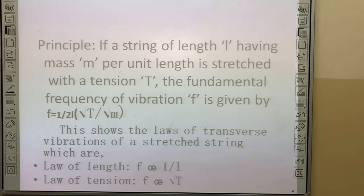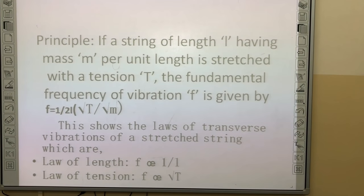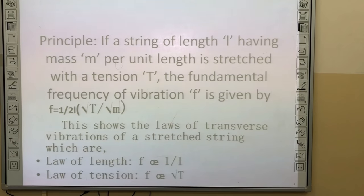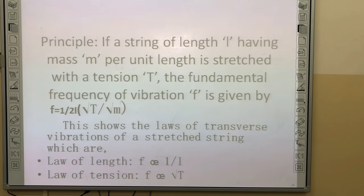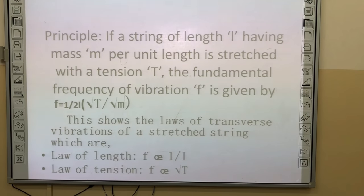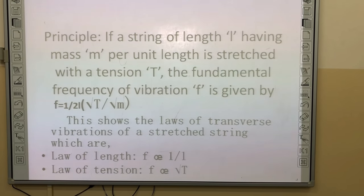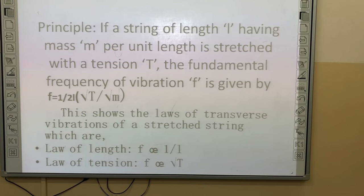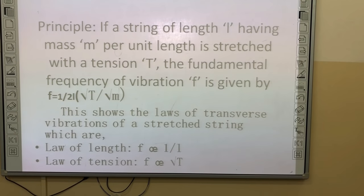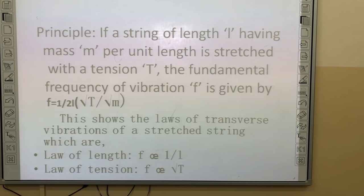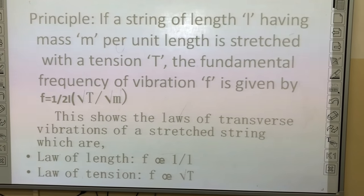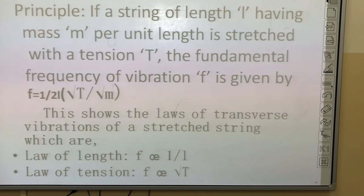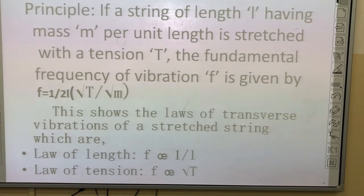The principle involves transverse waves produced in a sonometer. If a string of length L having mass M per unit length is stretched with tension T, the fundamental frequency F is given by F = (1/2L) × √(T/M). This shows the laws of transverse vibrations: the law of length, where F is proportional to 1/L, and the law of tension, where F is proportional to √T.